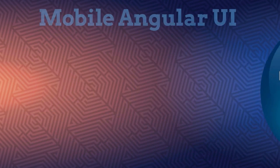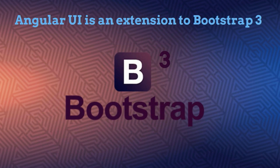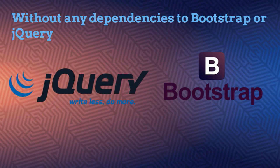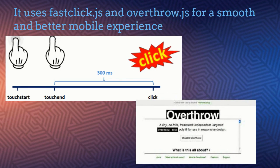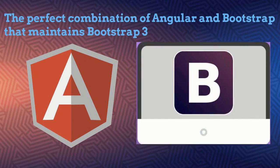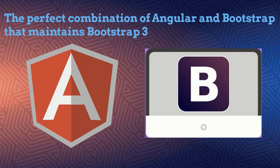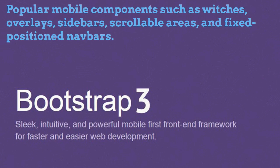Number ten: Mobile Angular UI. Angular UI is like an extension to Bootstrap 3, but without any dependencies on Bootstrap or jQuery. It uses FastClick.js and overthrow.js for a smooth and better mobile experience. This is the perfect combination of Angular and Bootstrap that maintains Bootstrap 3's amazing syntax and adds popular mobile components such as switches, overlays, sidebars, scrollable areas, and fixed position navbars.